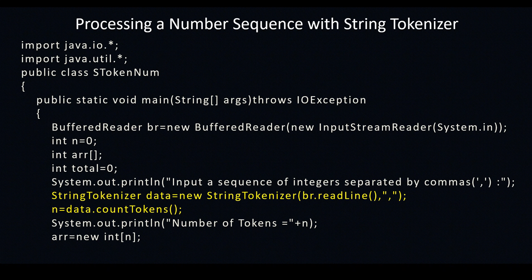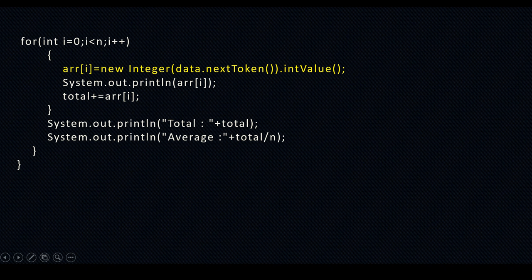You can change the delimiter — by default it is space, but here you change it to comma. So: StringTokenizer data = new StringTokenizer(br.readLine(), ","). By putting comma within double quotes, comma becomes the delimiter. So when you enter numbers you have to separate them by comma, not space. Once that whole line is read, next line is: n = data.countTokens(). It counts the number of tokens — comma is not counted as a token, only the numbers are counted. Then you display: system.out.println with n. Now you can declare the full array: ar = new int[n].